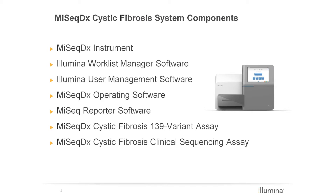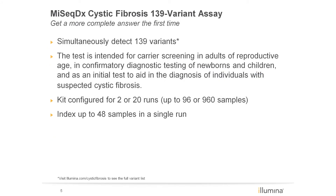The final components of the system are the two assays. The 139 variant assay is the largest IVD panel of CFTR variants on the market today. The 139 variants that comprise this panel were selected using the CFTR2 database, which is the result of an international consortium that worked to determine the clinical and functional relevance of CFTR variants.